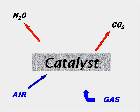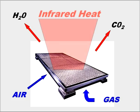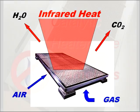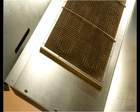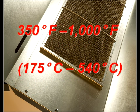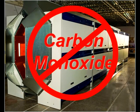Catalytic infrared heaters use a specialized platinum catalyst to break down the components of natural gas into water and carbon dioxide, releasing heat in the process. This flameless catalytic reaction occurs within a temperature range of 350 to 1000 degrees Fahrenheit and does not generate any NOx or carbon monoxide.